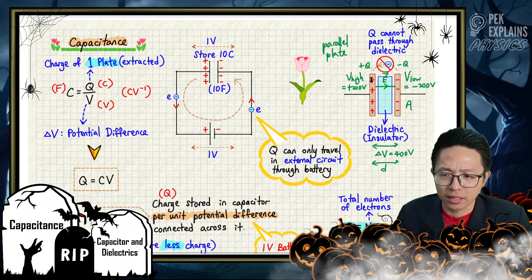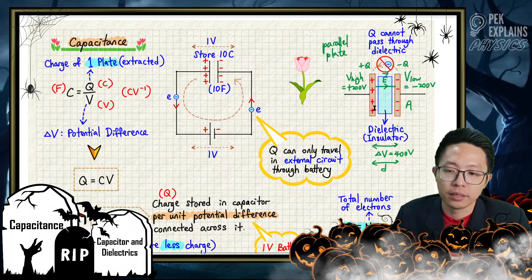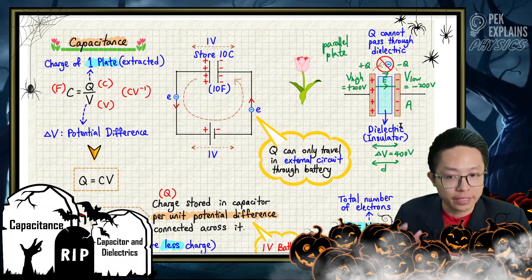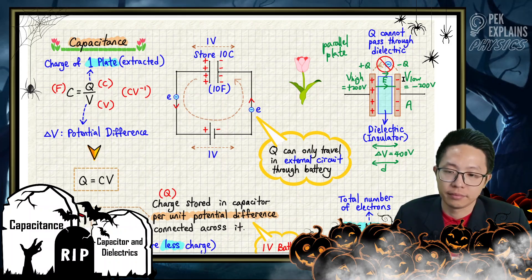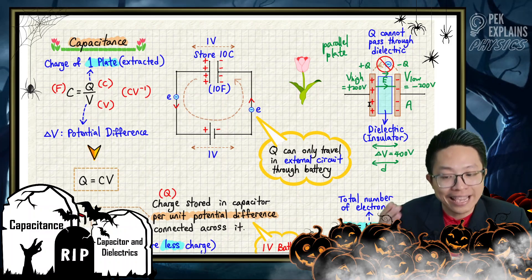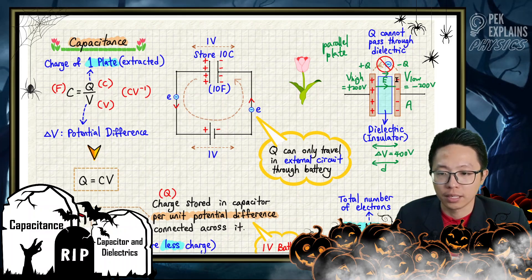Why is one plate positive and the other negative? In short, the positive plate becomes positive because it loses electrons to the other plate. The other plate gains those electrons, that's why it becomes the negative plate. So this plate has a lack of electrons, while this plate has more electrons — that's why it becomes the negative plate.